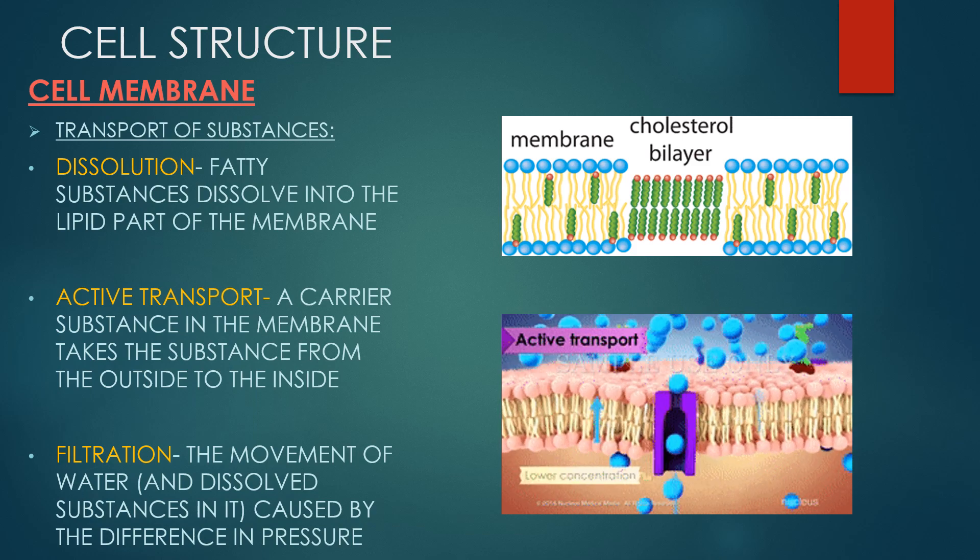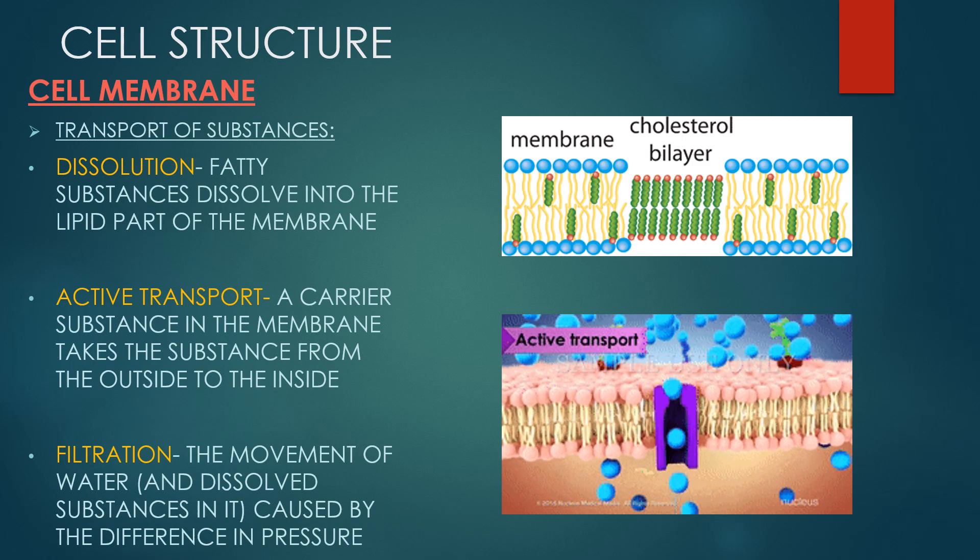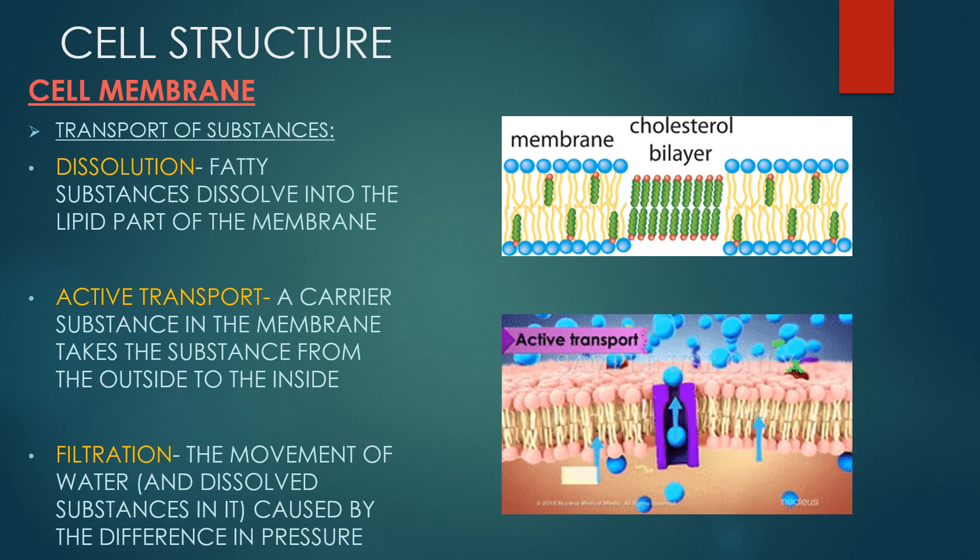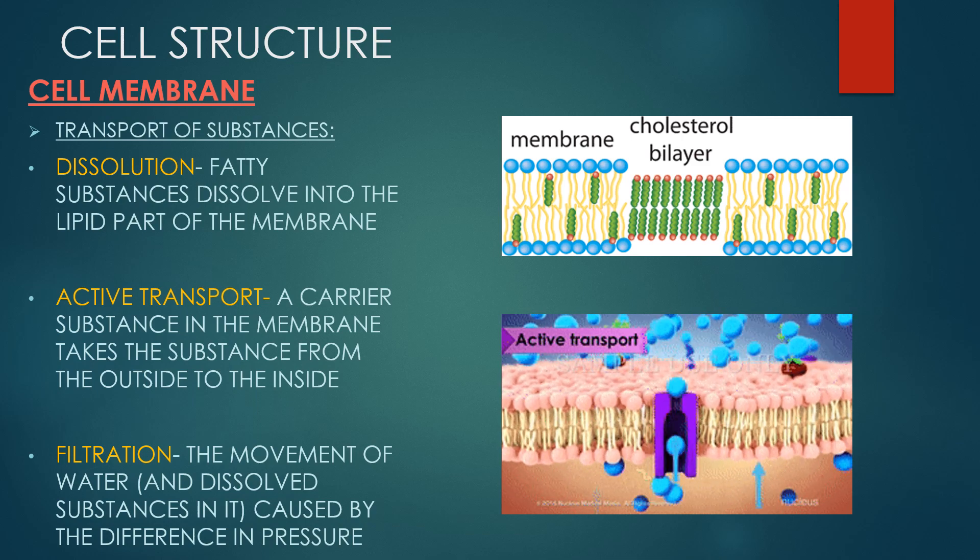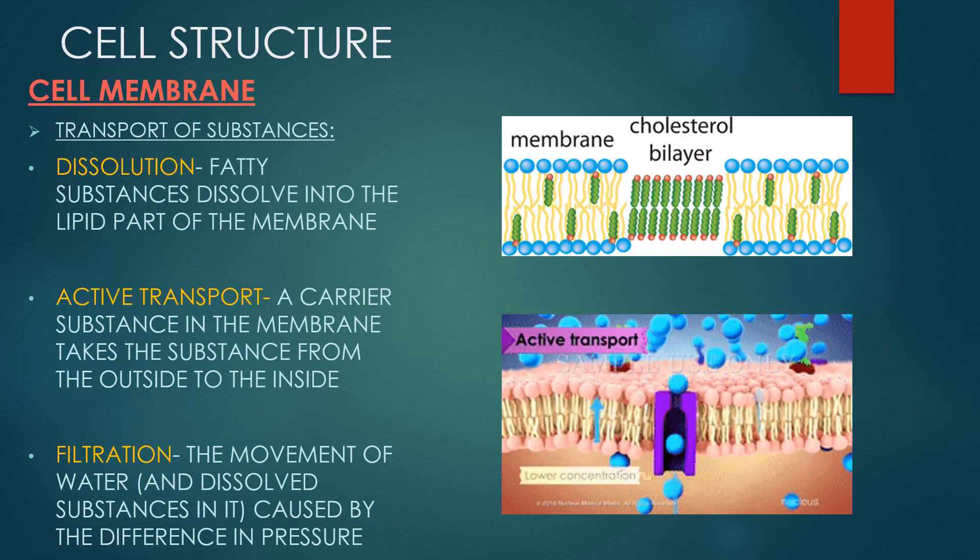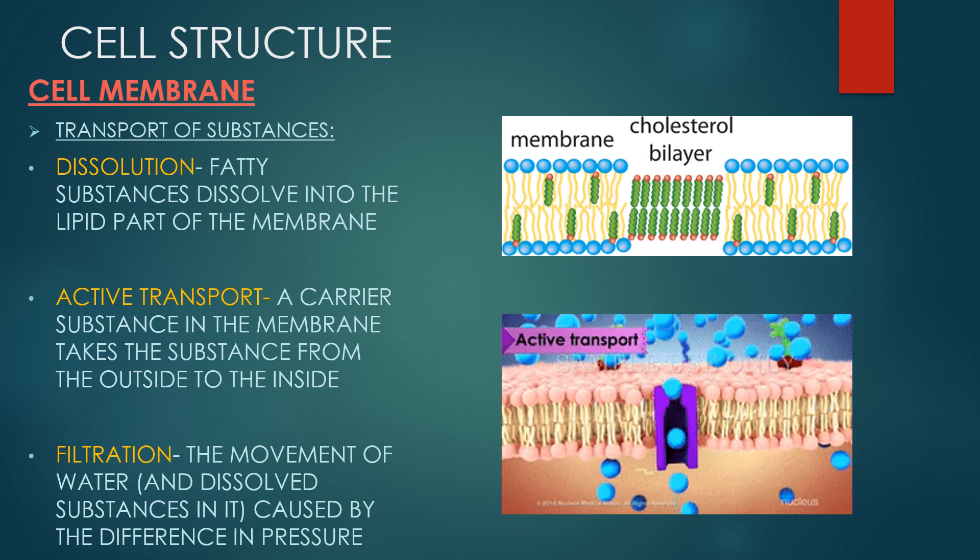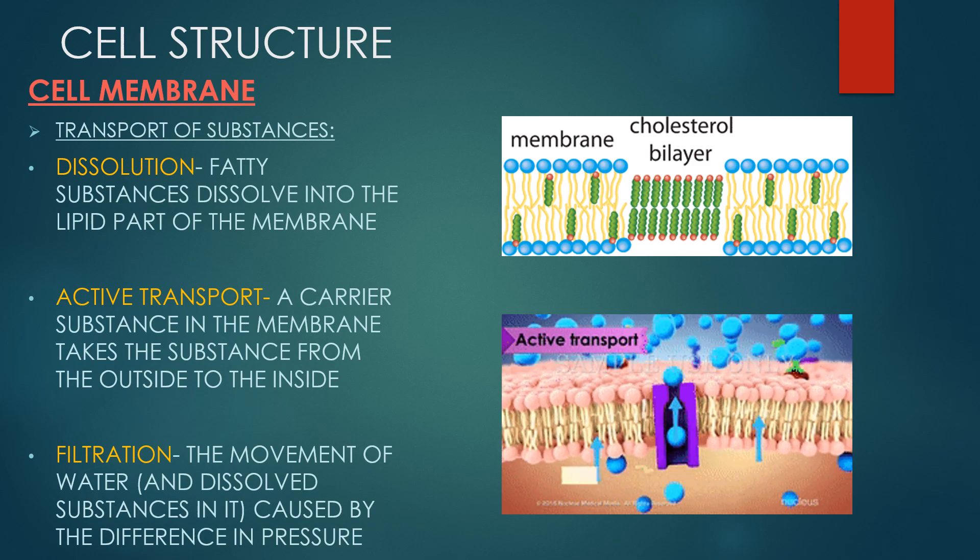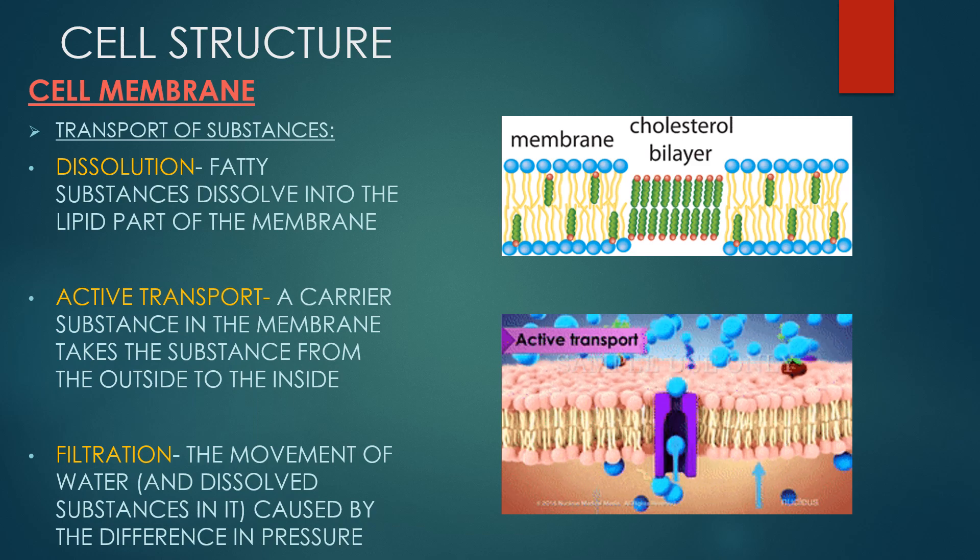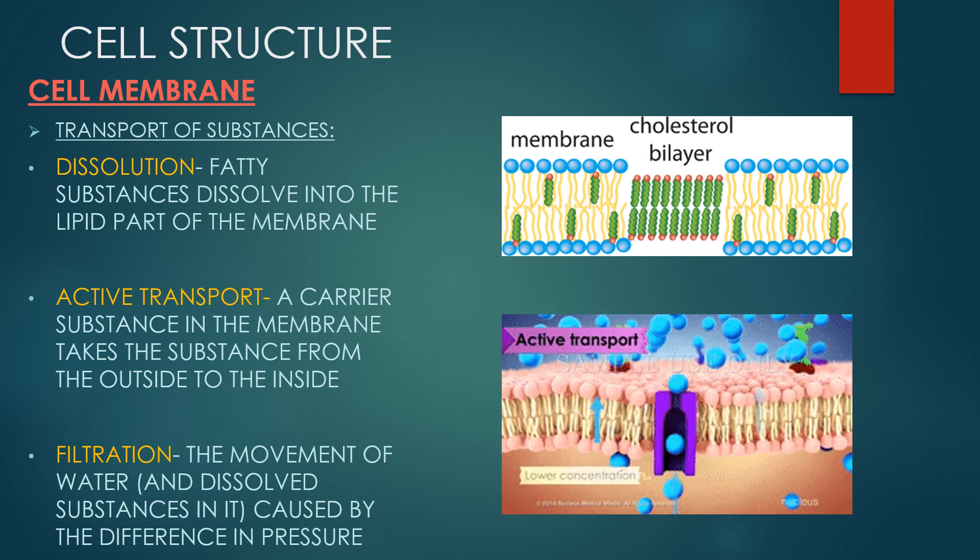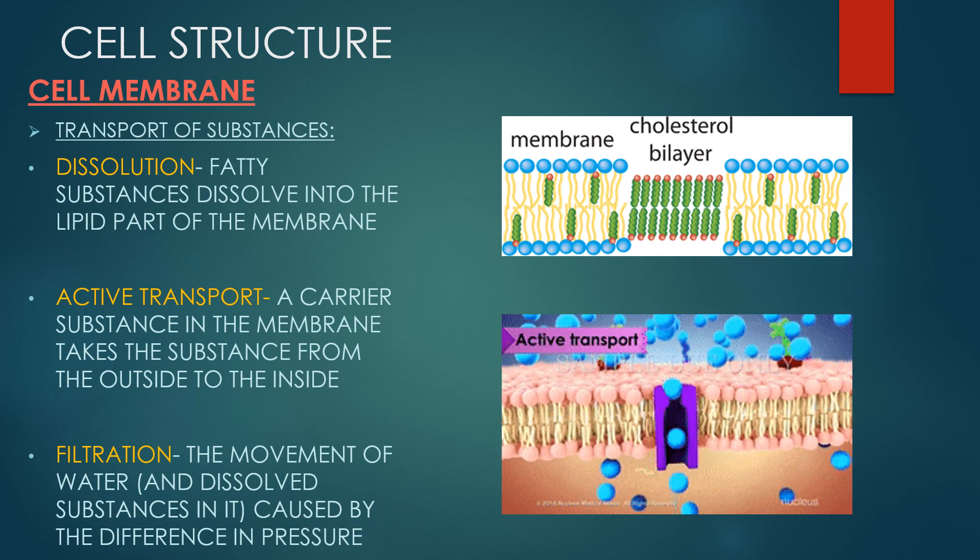Some molecules such as carbon dioxide and oxygen can diffuse across the plasma membrane directly but others need help to cross its hydrophobic core. In facilitated diffusion, molecules diffuse across the plasma membrane with assistance from membrane proteins such as channels and carriers.